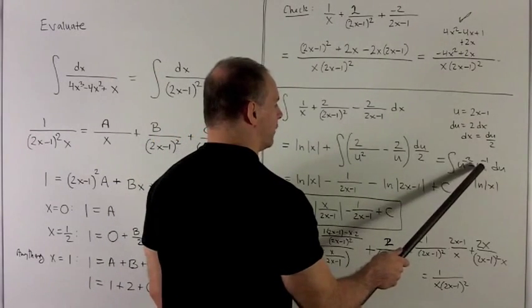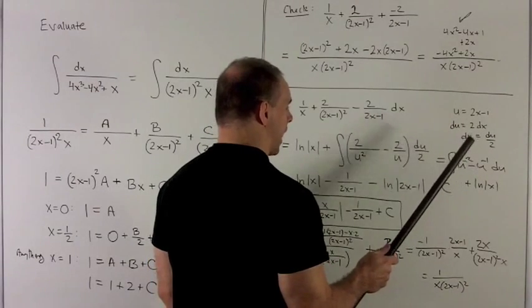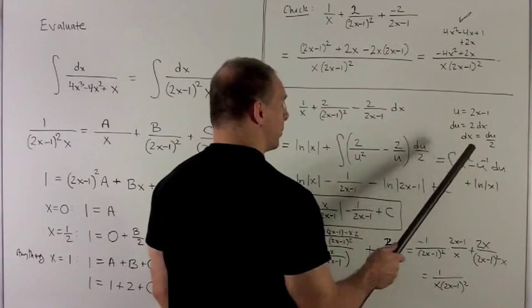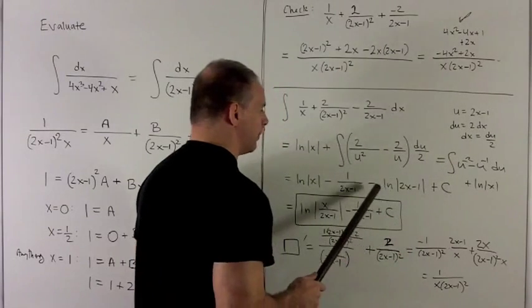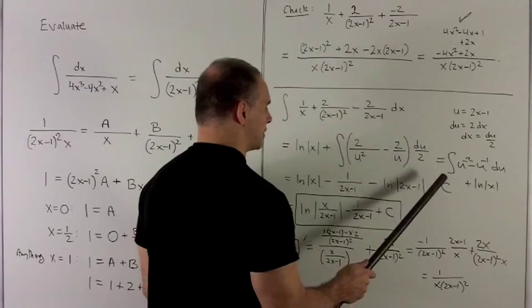If I go to this term, any derivative of u inverse is just natural log of absolute value of u. So I put in my 2x minus 1, which gives me minus natural log 2x minus 1. And then plus a constant.